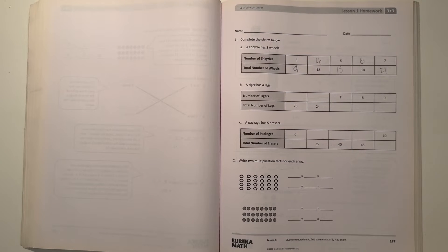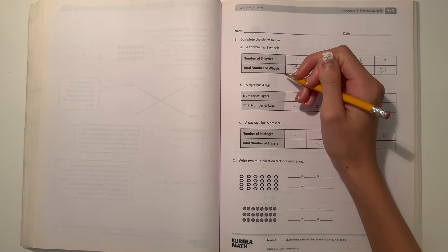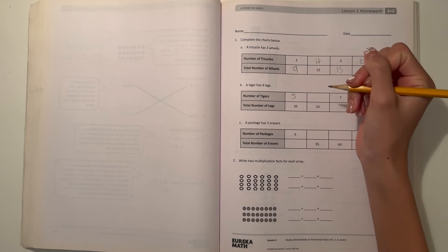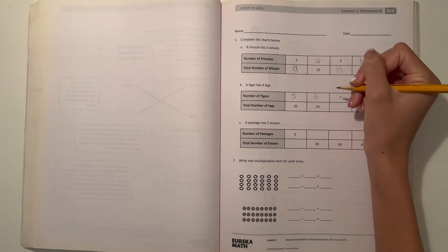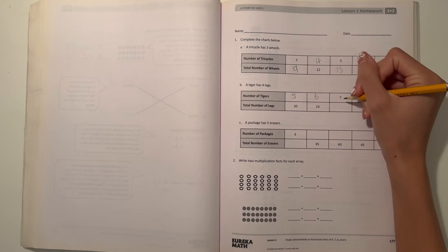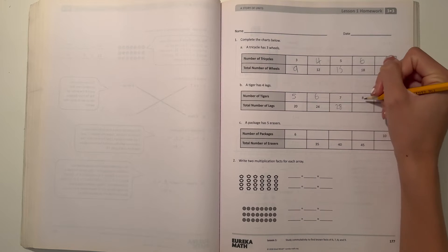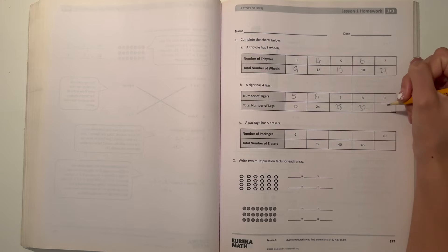And B, a tiger has 4 legs. So if there's 20 legs, then 20 divided by 4 is 5. So there's 5 tigers. And if there's 24, then that would be 6 tigers. And then 7 times 4 is 28 legs. And 8 times 4 is 32 legs. And 9 times 4 would be 36 legs.